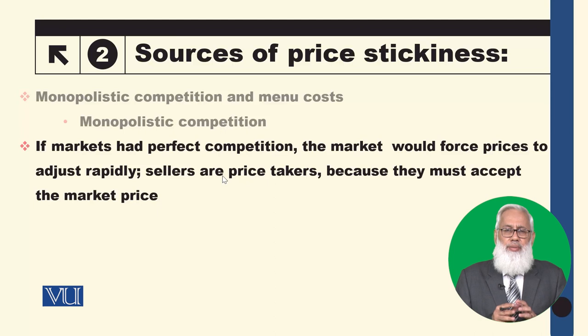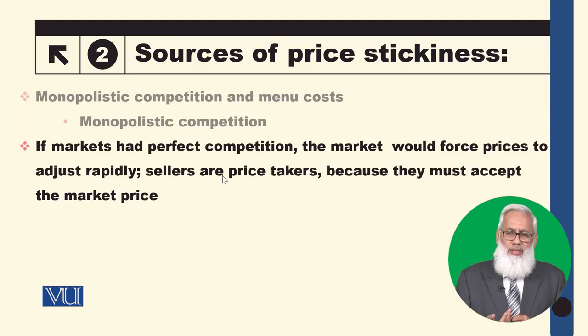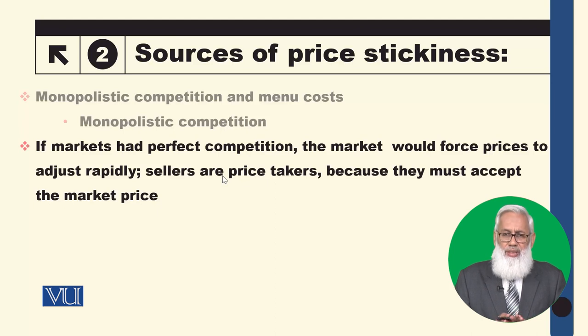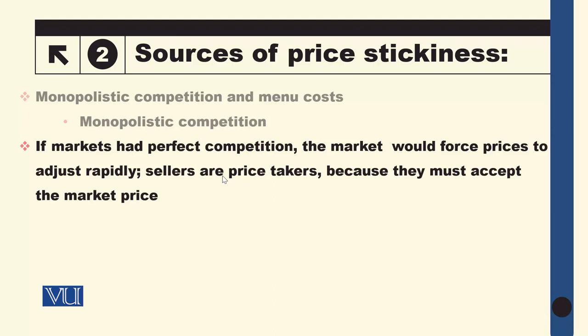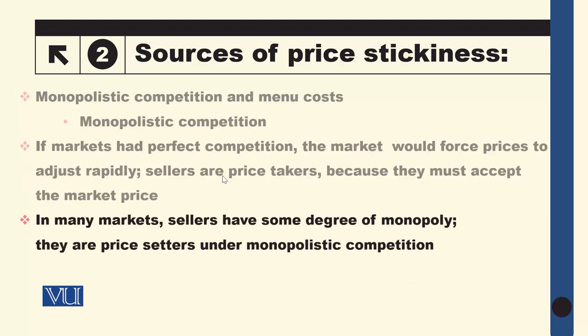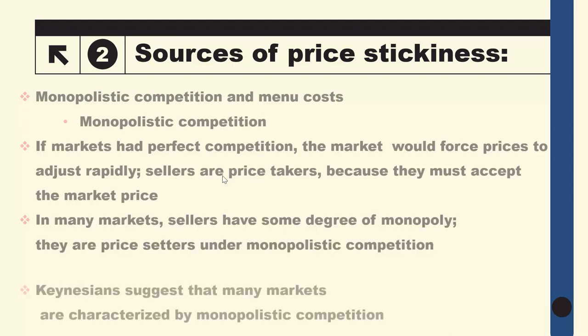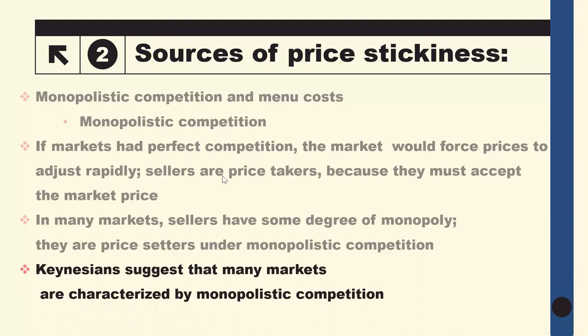In microeconomics we discuss perfect competition, in which firms and producers are price takers because there are a large number of buyers and sellers and the product is homogenous. As a result, no individual firm can influence price — firms are price takers. Keynesians suggest that many real-world markets are characterized by monopolistic competition, meaning markets are not perfectly competitive but monopolistically competitive.